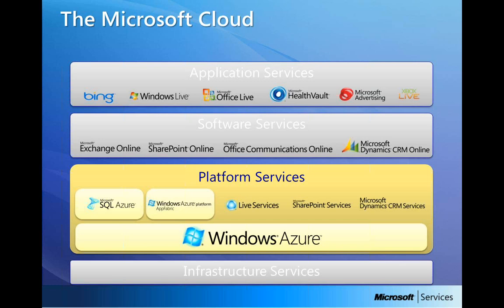SaaS also enables businesses to reallocate IT operations cost away from hardware, software spending, and other things — we simply want to reduce that cost. And because the applications are hosted centrally, updates can be released without the need for users to install new software. You just need to install the update at one location and every user can see that update — you do not need to go to each and every system to install it.